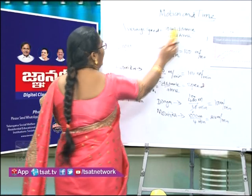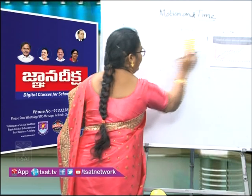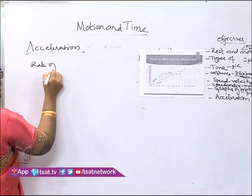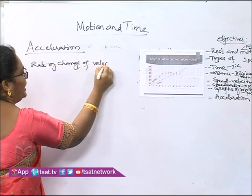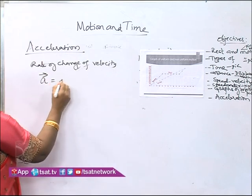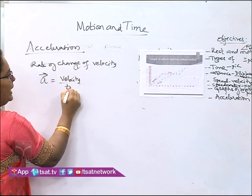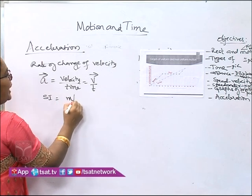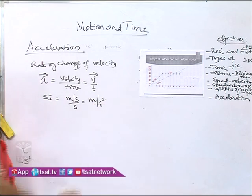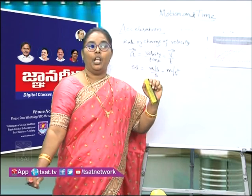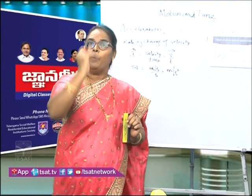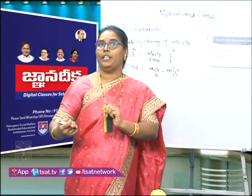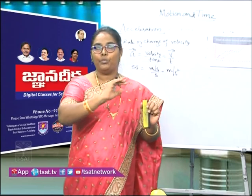Let us move on to our next topic: acceleration. Acceleration is the rate of change of velocity. Acceleration is denoted by the letter A, and equals velocity divided by time — V̄ / T. Its SI unit is meter per second squared. When a body's speed increases, we say it is in acceleration. When its speed decreases, we say it is in deceleration. For example, a train approaching the station slowly decreases its speed until it reaches zero at the platform — the train is moving with deceleration.